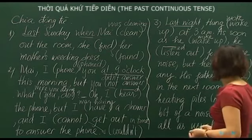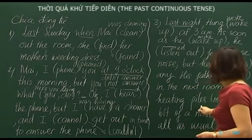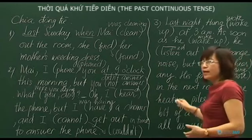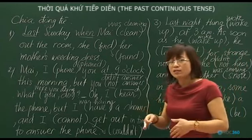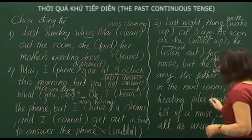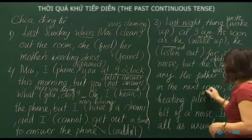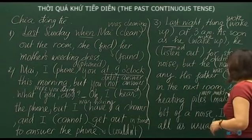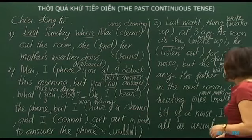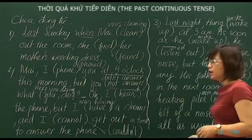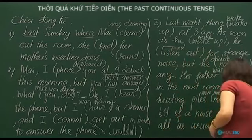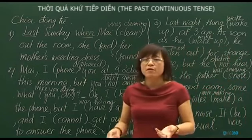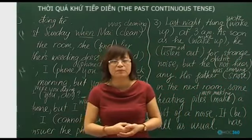'Some heating pipes were making a bit of strange noise.' This is an ongoing background action, so past continuous: 'were making.' 'It was all as usual.' We conjugate: 'It was all as usual.' Hopefully we got 100% correct.